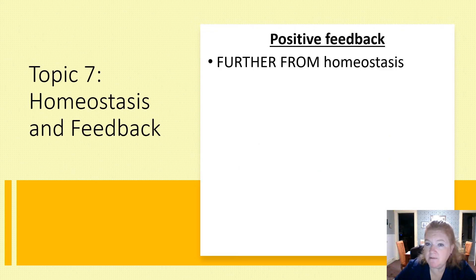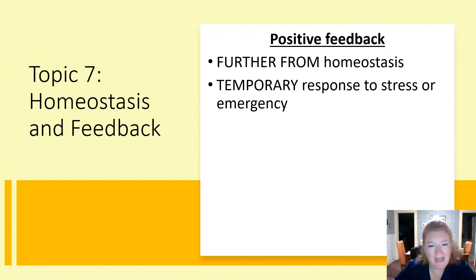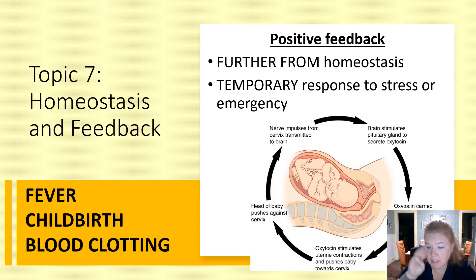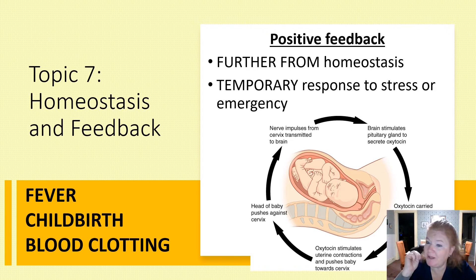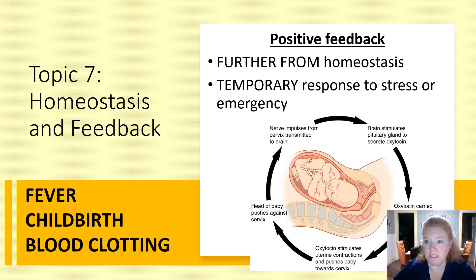Positive feedback moves the body further from homeostasis. It's temporary and responds to a stress or emergency crisis. Three examples to remember: fever — the crisis is disease; childbirth — the crisis is needing to deliver the baby; and blood clotting — the crisis is bleeding. Your body responds to the crisis, temporarily moving away from homeostasis.